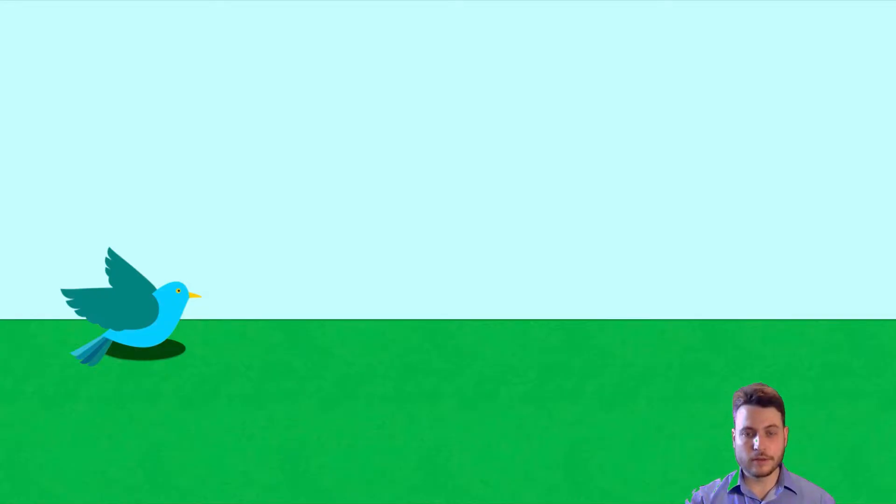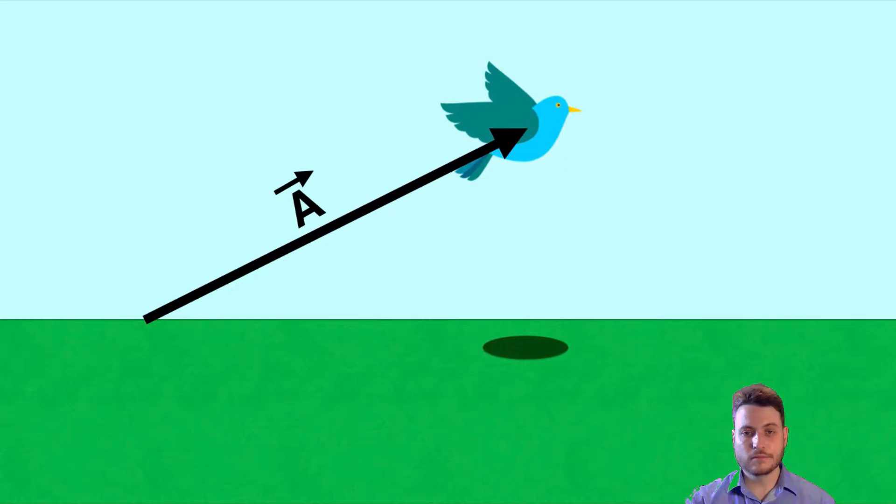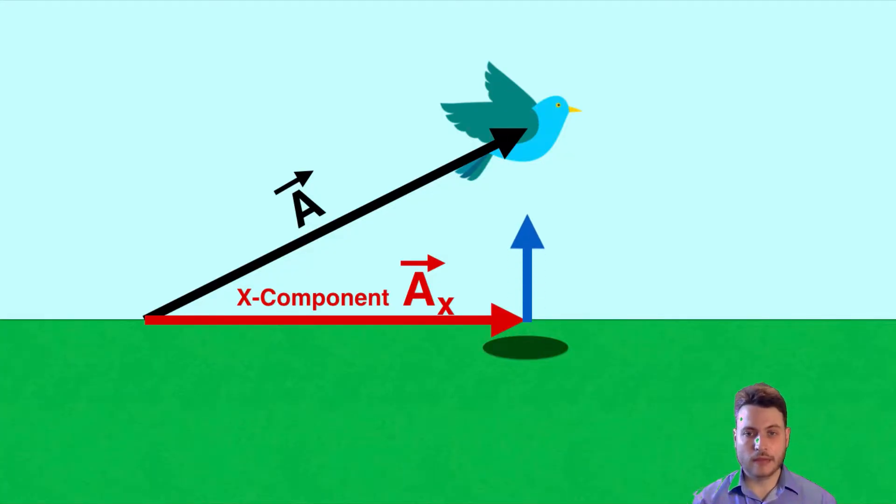Just as a real-world example, we could imagine a bird flying up in a certain direction, and the vector of the bird's motion I'm going to call vector A. The x component of the bird's motion A_x could be thought of as how far along the ground the bird's shadow traveled as it moved. And the y component of the bird's motion would be how high into the air the bird went. So x and y components can have real physical meanings in addition to the original vector that they're making up.